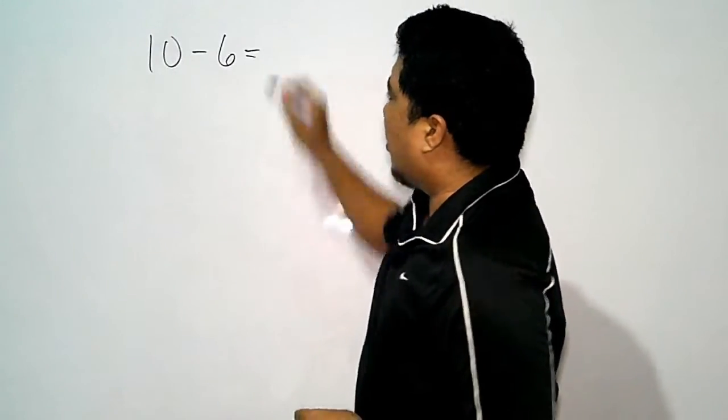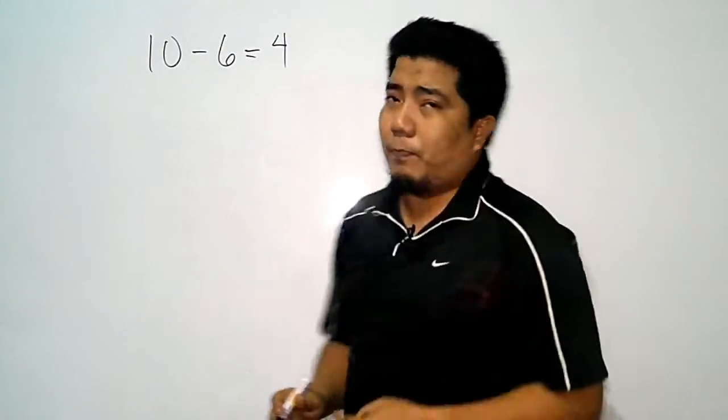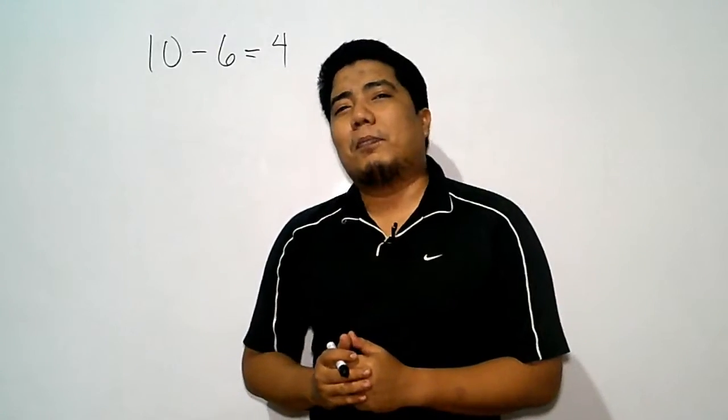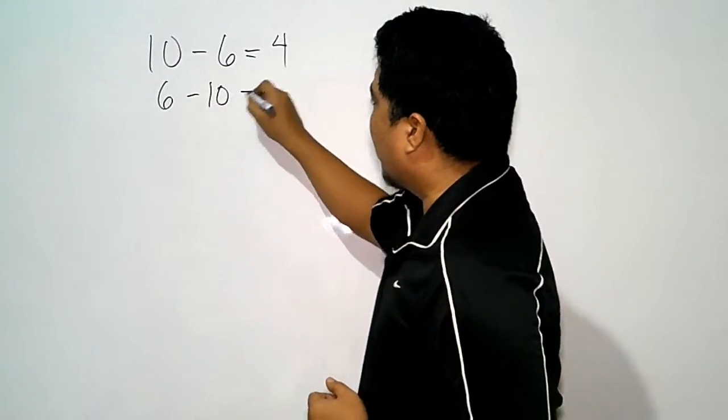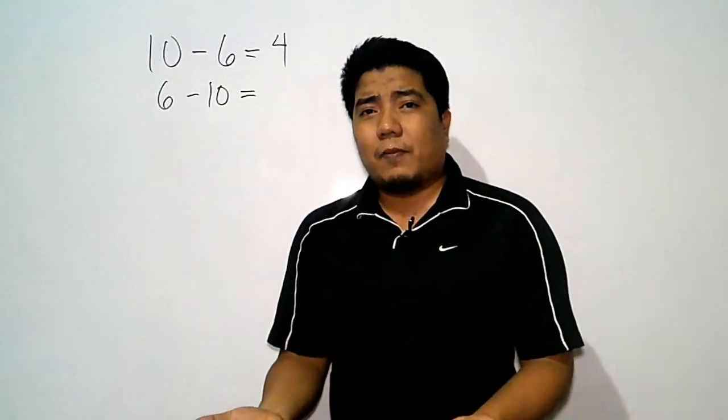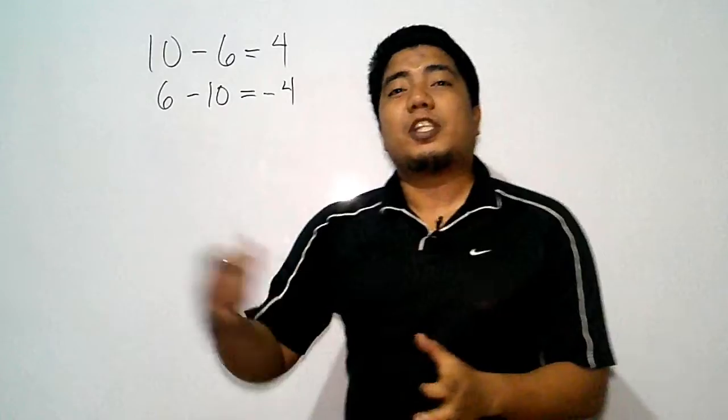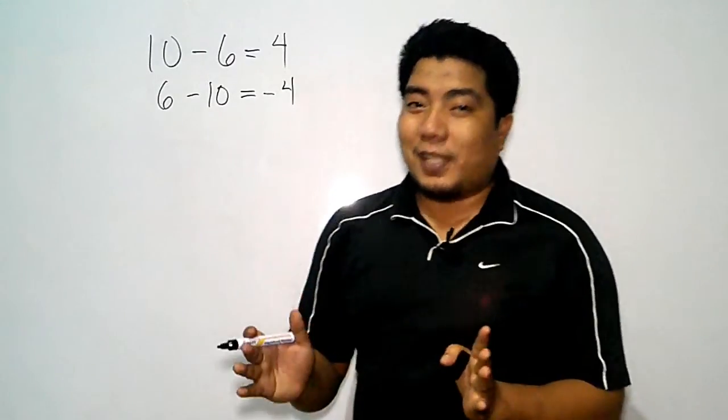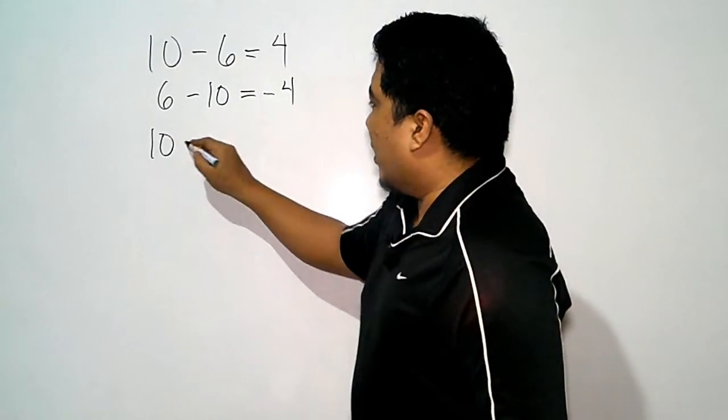10 minus 6 is very simple, right? Because what we will do is you just subtract them, the answer is 4. For most students, this is a simple problem. How about we have 6 minus 10? For other students, they can answer this as negative 4. That's correct. But for some students, it will be a little confusing.